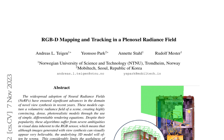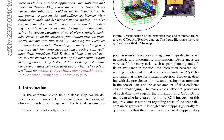The DTAM algorithm by Newcombe et al. first proposed the idea of performing dense simultaneous localization and mapping (SLAM), by separating the problem into alternating tasks of updating a dense 3D model and tracking the camera pose by aligning the camera image to the model using randomly sampled image pixels. KinectFusion built on this premise, but distinguished itself by relying only on a depth sensor and representing the entire model as a truncated signed-distance field, using the iterative closest point algorithm for pose optimization.